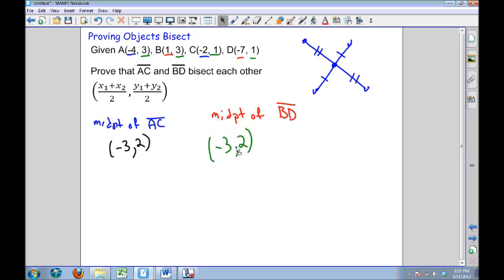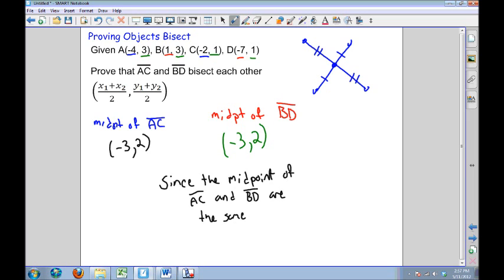Since the midpoints of these two values are the same, they must bisect each other. That is my conclusion that I will then make. Since the midpoint of AC and BD are the same, the two segments bisect each other. If two midpoints are equivalent, the two segments bisect each other.